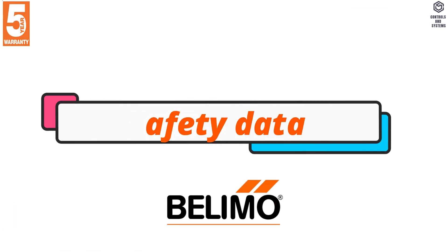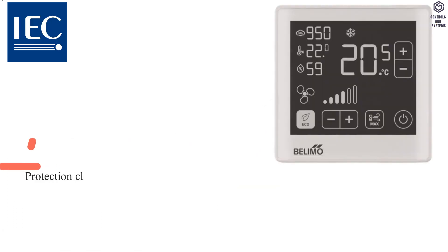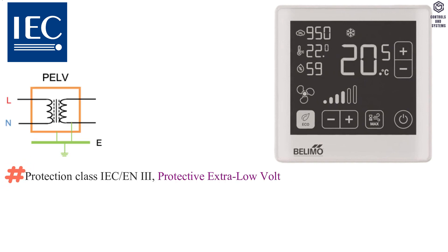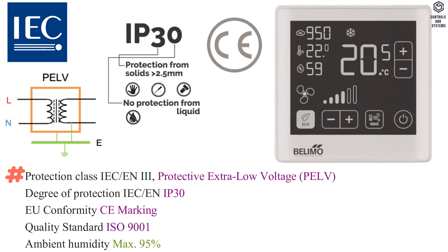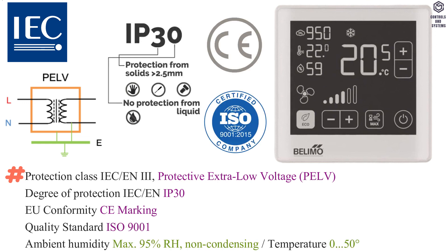Safety data: Protection class IEC/EN is Class 3 — protective extra low voltage. Degree of protection IEC/EN is IP30. EU conformity is CE marking. Quality standard is ISO 9001.